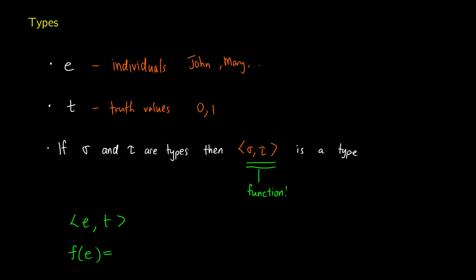These are just categories. So in application, we would be putting in a name and then getting a truth value — either one or zero. Another way of writing this is by saying it's a function from D_E, the domain of entities, to the domain of types — in other words, it takes a name and pops out a truth value. The D just means the domain or codomain, basically what our sets are.